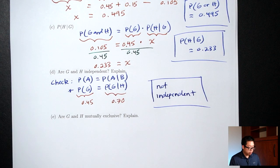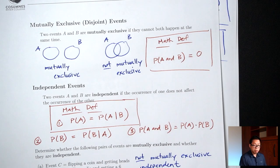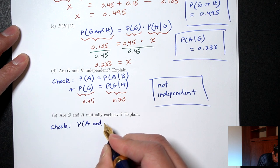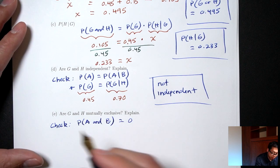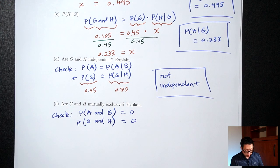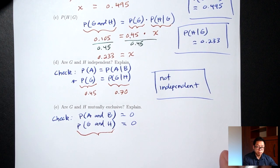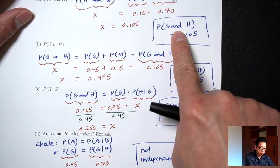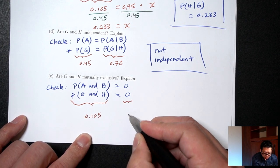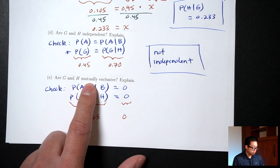Part E asks whether G and H are mutually exclusive. For mutual exclusivity, we check: probability of A and B equals 0, which becomes probability of G and H equals 0. Left side: probability of G and H is 0.105. Right side is 0. These are not equal, so G and H are not mutually exclusive.